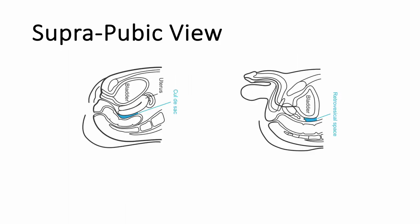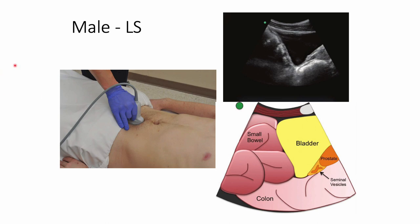For the fourth view, the suprapubic view, there is a difference between male and female. In males, free fluid collects between the bladder and the rectum. In females, it starts between the uterus and the rectum in the cul-de-sac or Douglas pouch, and with more fluid it will surround the uterus and fill the space between the bladder and the uterus. For the male, starting with the longitudinal section — probe just above the symphysis pubis with the marker facing the patient's head — you can see the triangular urinary bladder and the rectum, and anticipate free fluid collection in this space.